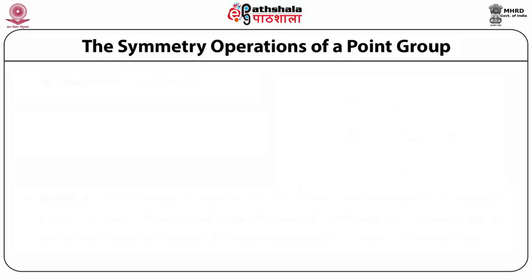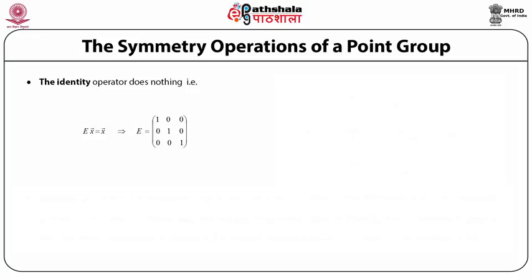Let us discuss the symmetry operations of a point group. Number one: the identity operator. By its very definition, the identity operator is the one that does nothing. The vector X is transformed into itself by the identity operator E. Therefore, the identity operator E can be represented by the diagonal 3×3 matrix with ones on the diagonal: [1 0 0 / 0 1 0 / 0 0 1].